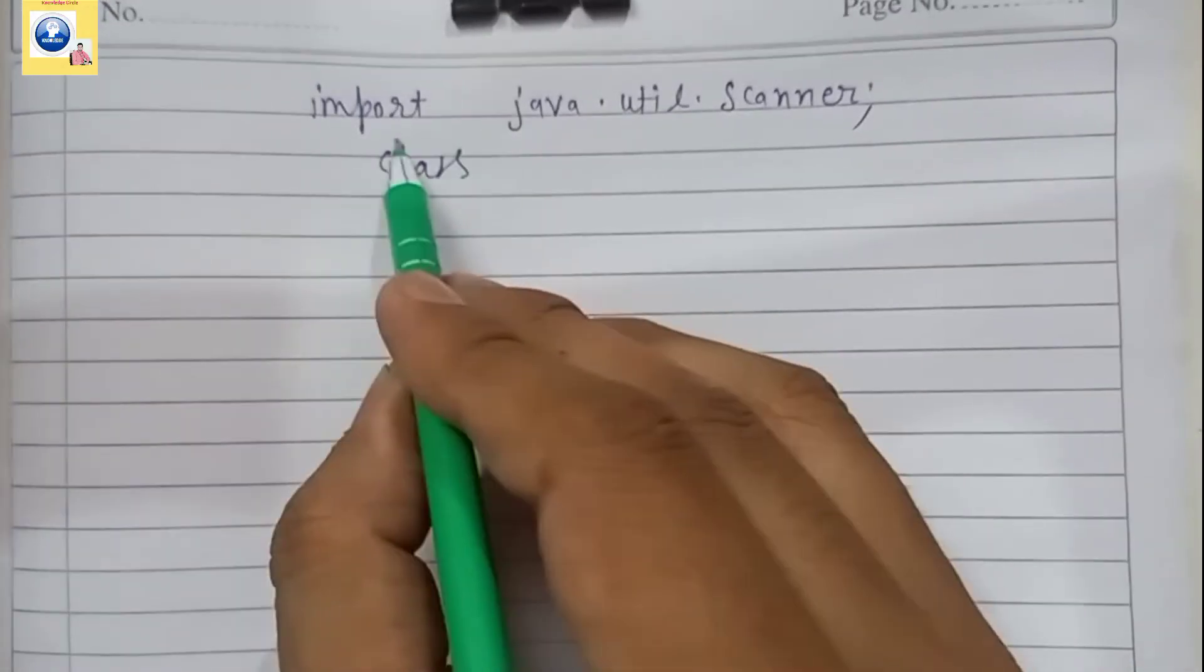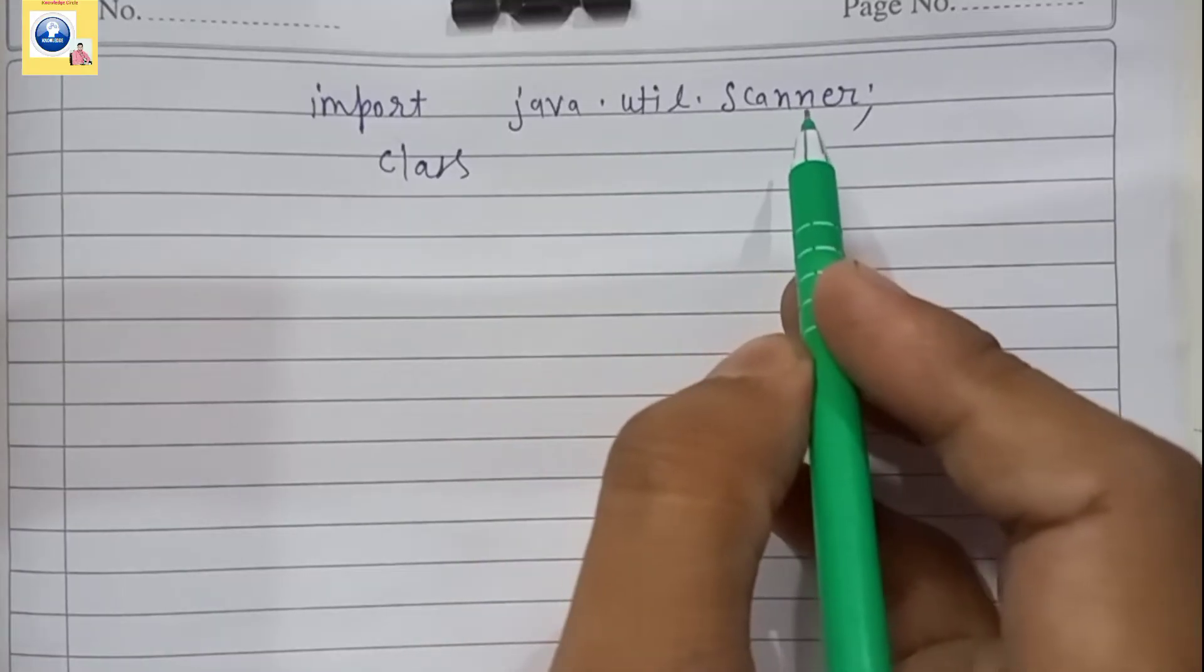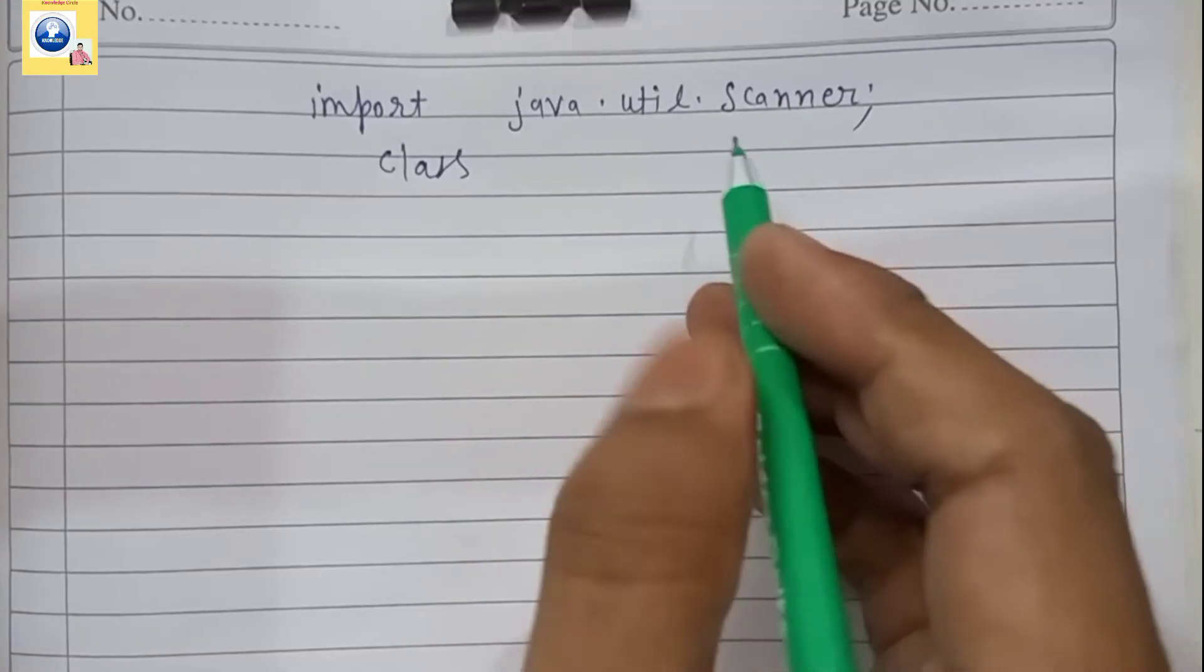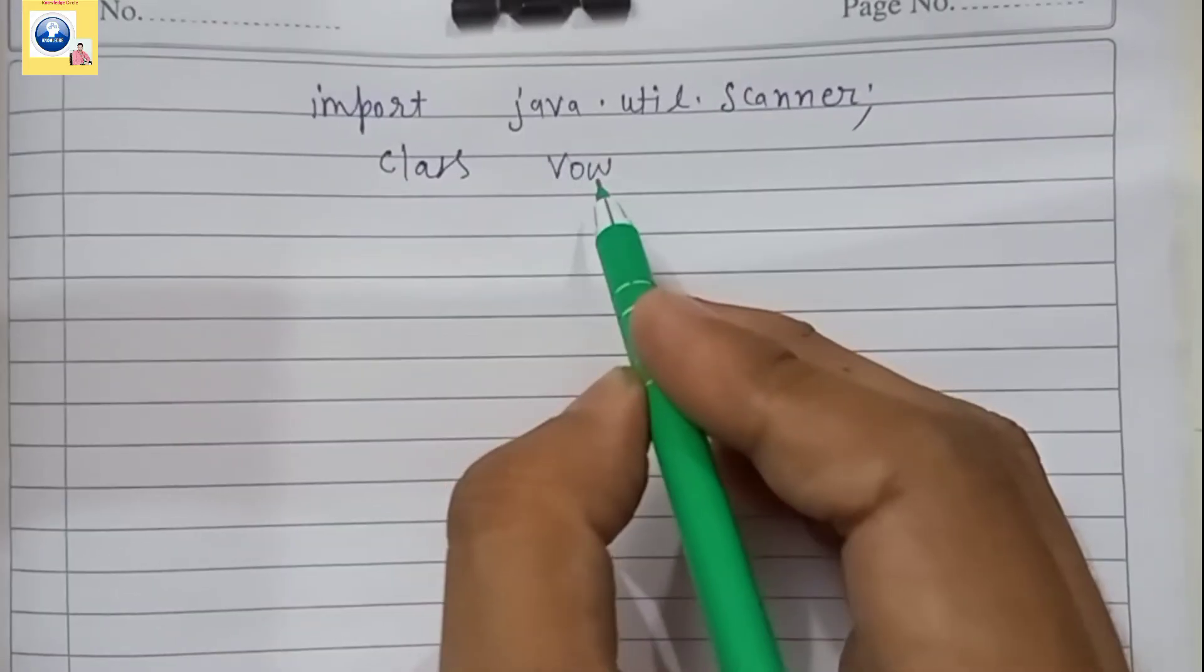First of all, I have written the very first line of the program: import java.util.Scanner, so that we can utilize the methods of Scanner class to take input from user. Here I am creating a class. The class name I have given is Vow.